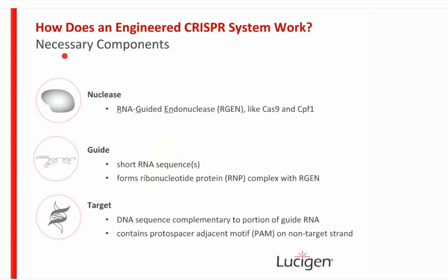How does an engineered CRISPR system work? There are three necessary components. First, the nuclease — the RNA-guided endonuclease or RGEN; examples are Cas9 and CPF1. Second, you need a guide: a short RNA sequence that forms a ribonucleoprotein or RNP complex with the RGEN. Third, you need a target: the DNA sequence complementary to the guide RNA that contains a protospacer adjacent motif or PAM site on the non-target strand.